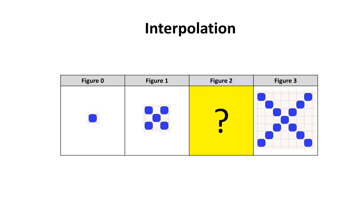Examine the figures below. I want you to interpolate the number of blocks in figure 2. This is interpolation, since this is a prediction that occurs between what you already know. If you had interpolated figure 2 to contain 9 blocks, you would have been correct.